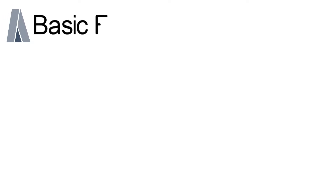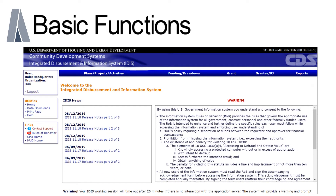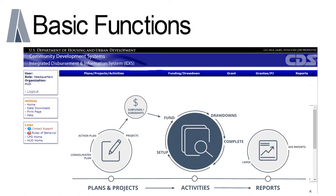Let's move on to IDIS functionality. There are many different components within IDIS, so let's start by talking about some of the basic functions. There are four basic functionality areas within IDIS that are relevant to the Housing Trust Fund grantee on the IDIS landing page: Plans, Projects and Activities, Funding Drawdown, Grants, and Reports.